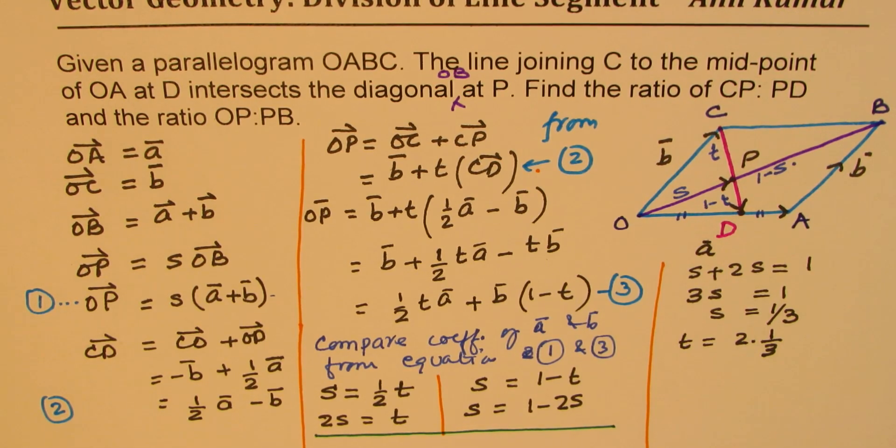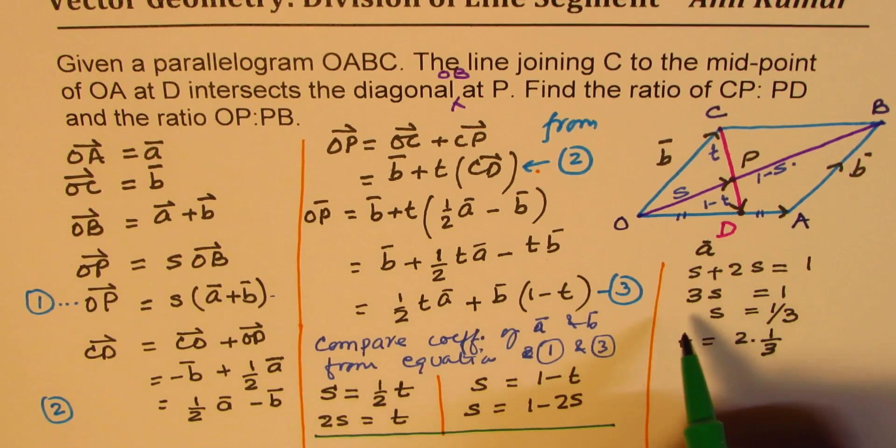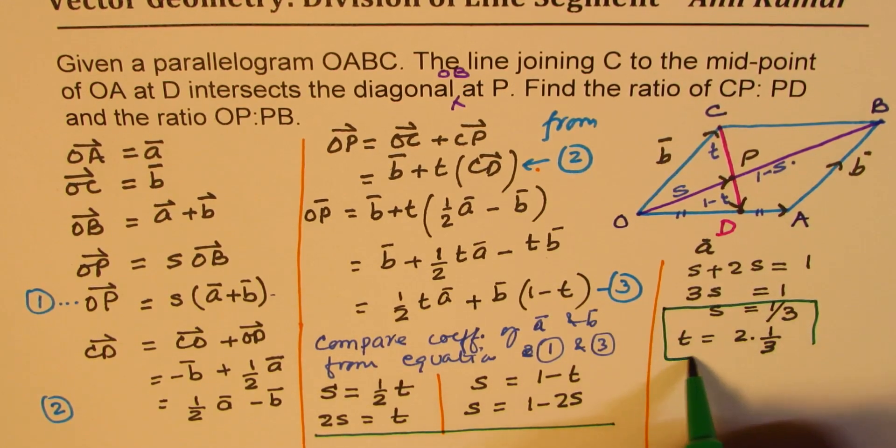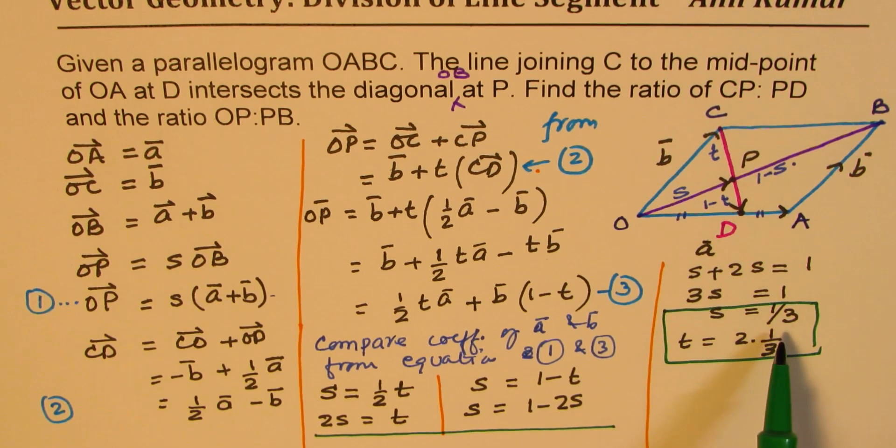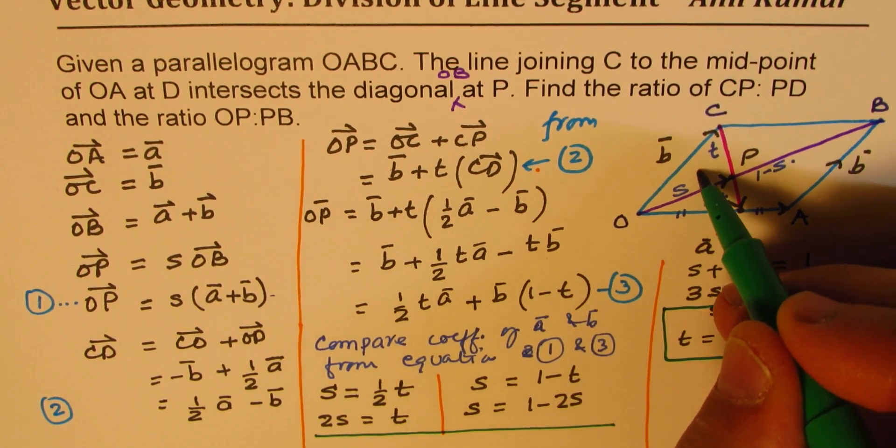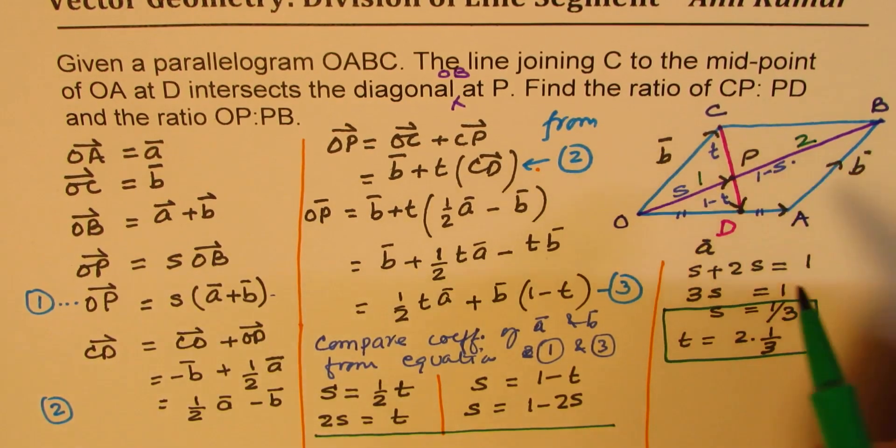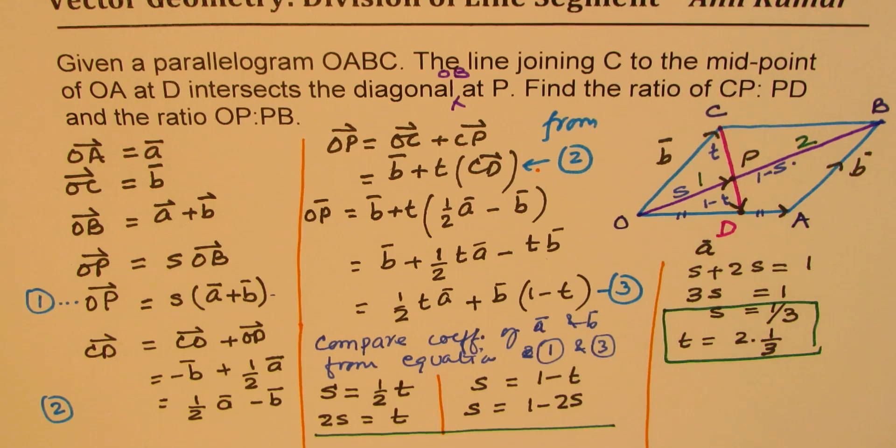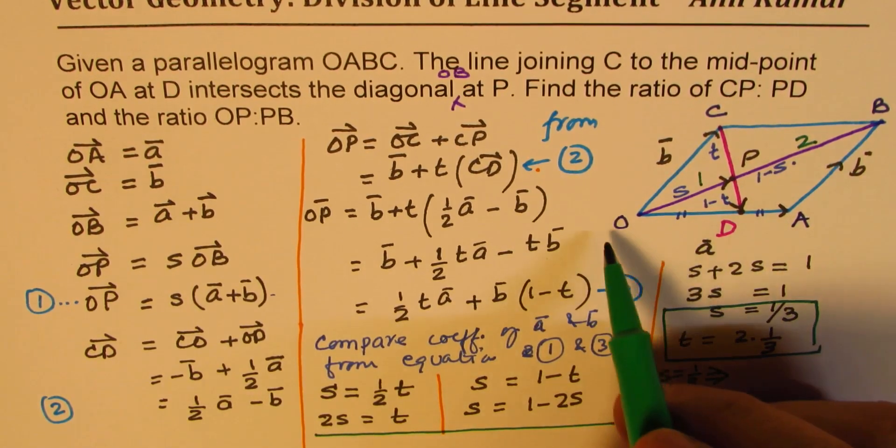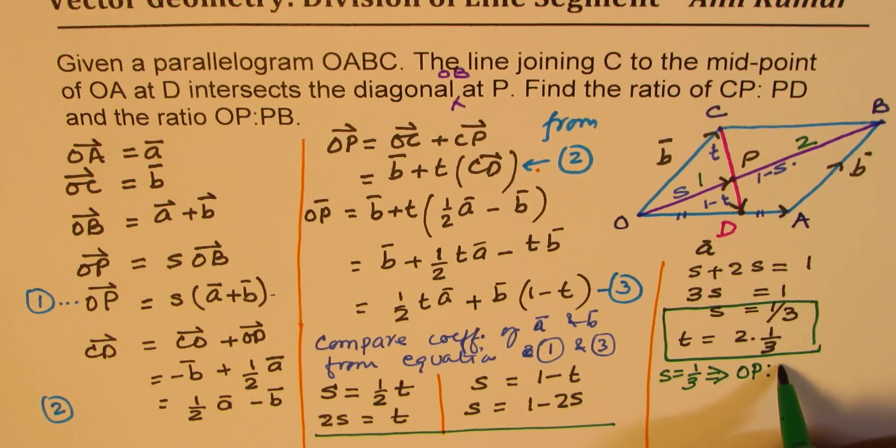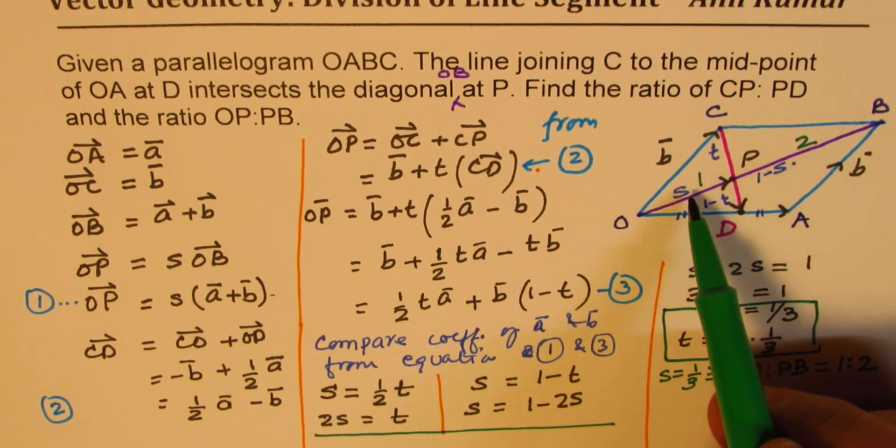Now, when I say that S is 1 over 3, then what is the ratio for OP to PB? Now, I am saying S is 1 out of 3. That means this is 1, that has to be 2. So 1 out of 3 equal divisions, that is what it means. So when I say S is 1 third, that implies that the ratio OP is to PB is basically equal to 1 is to 2. So out of the three parts, S is 1 third.